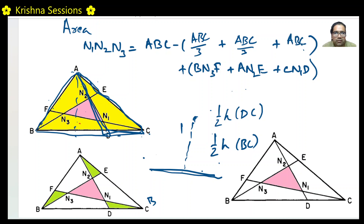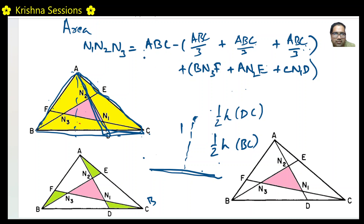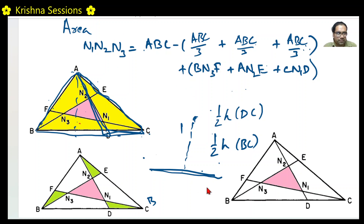Luckily we have figured out the areas of all three yellow triangles: each is ABC/3, so all three together equal ABC. That means the yellow part cancels out completely in the formula, and we now only need to worry about calculating the areas of the three green triangles.